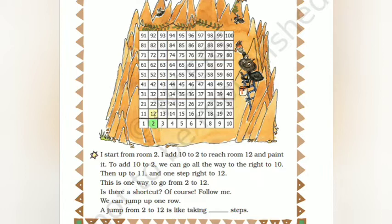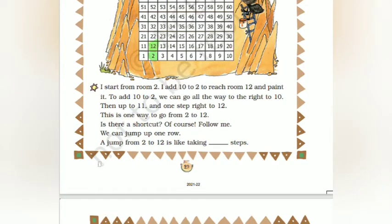From room 2, we start to paint and add 10 to 2, so we are adding 10 to this 2. What does it become? It becomes 12. To add 10 to 2, we can go all the way right to 10, then up to 11, and then one step to 12. Is there a shortcut? Of course! We can jump up one row. A jump from 2 to 12 is like taking 10 steps.